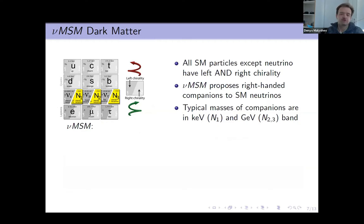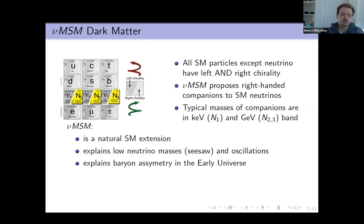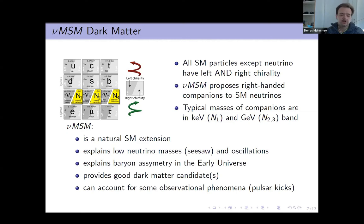Very brief introduction to sterile neutrinos. They appear as a natural extension of the standard model. This extension proposes right-handed companions to standard model neutrinos. Typical masses of these companions are in keV and GeV band. νMSM, this model with sterile neutrino, is nice because it's a natural standard model extension. It explains low neutrino masses via seesaw mechanism, and thus can explain oscillations of neutrino. It can explain baryon asymmetry in the early universe and provides a good dark matter candidate.